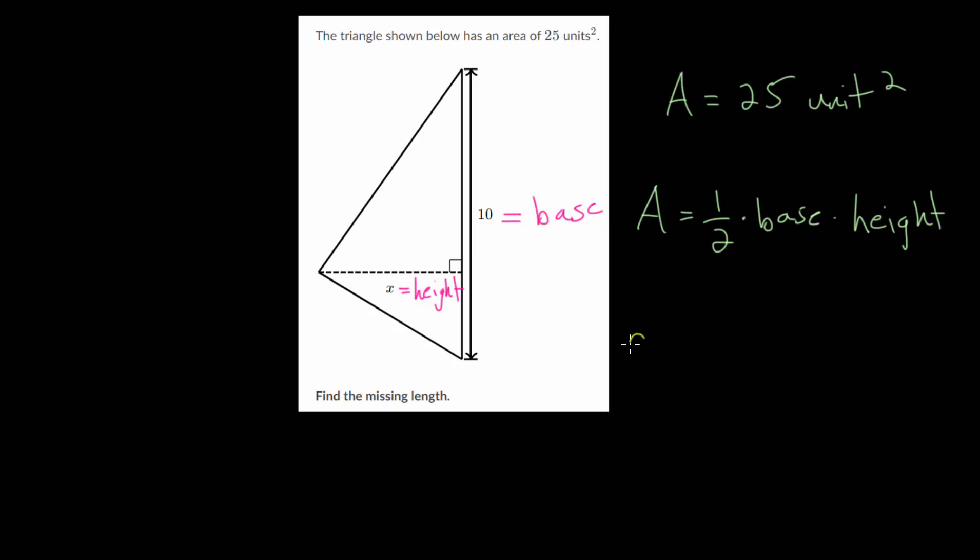So the area, we know that's 25, and we have 1/2 multiplied by the base, which is 10, multiplied by the height, which is x. We know half of 10 is just 5, so we get 25 equals 5x. To solve this, we just divide everything by 5 to cancel out that multiplication. So x is 5.